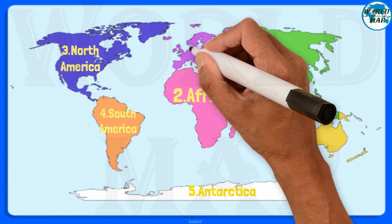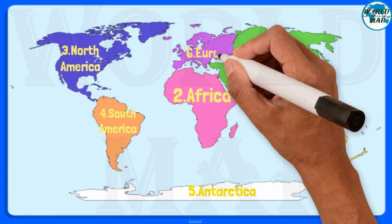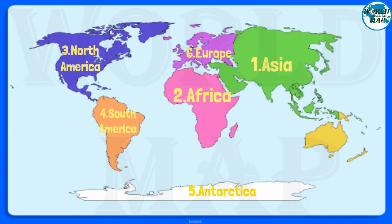Number 6. Europe. It is the sixth largest continent in the world and the third most populous. Europe and Asia are sometimes called Eurasia as they are physically connected, but are considered separate continents due to linguistic and cultural differences. Europe comprises 48 countries.